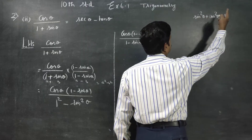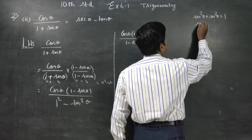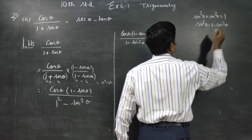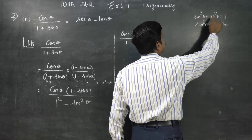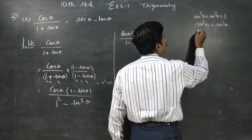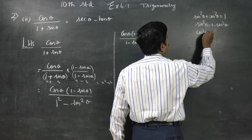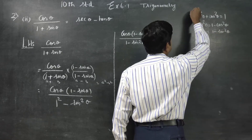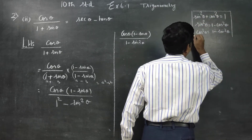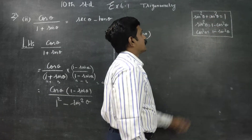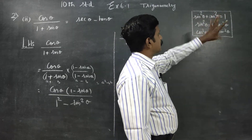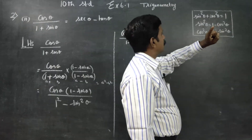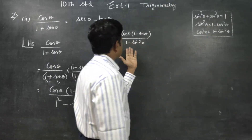The identity formula is: sin² θ + cos² θ = 1, which means cos² θ = 1 - sin² θ. That same formula is used here. So 1 - sin² θ is replaced by cos² θ in the denominator.